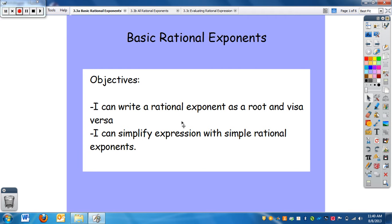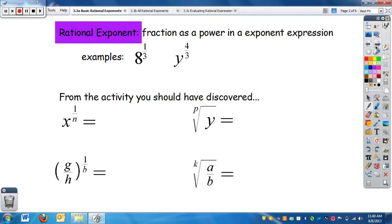This is combining your roots and exponent sections together. A rational exponent is a fraction as a power in an exponent expression. Here we have rational exponents: we have our base which is 8, but our exponent is actually a fraction. Here we have our base y and then another exponent fraction.